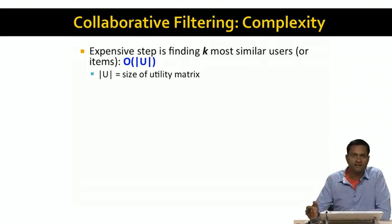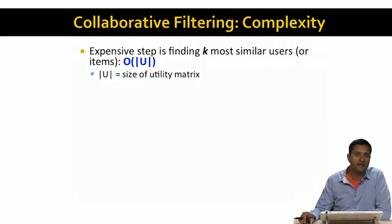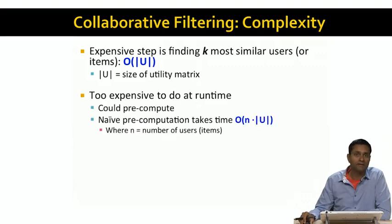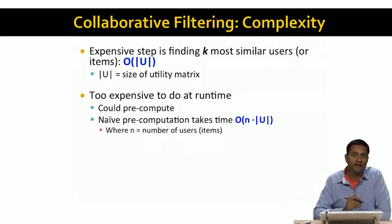Since the utility matrix can be very large — there are many millions of users and millions of items — it's clearly impractical to do this at run time. So what we really have to do is pre-compute, for every item, the set of other similar items, or for every user, the set of similar users.